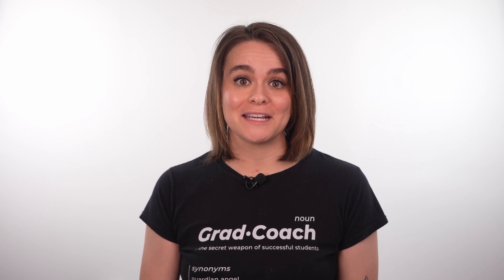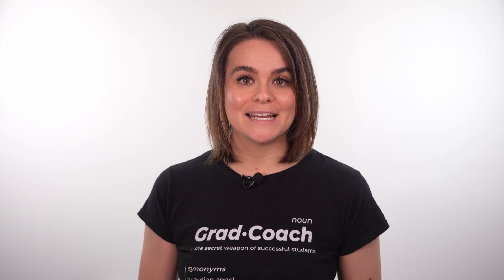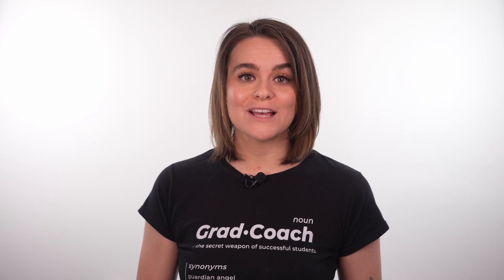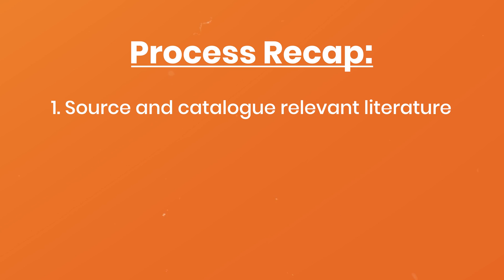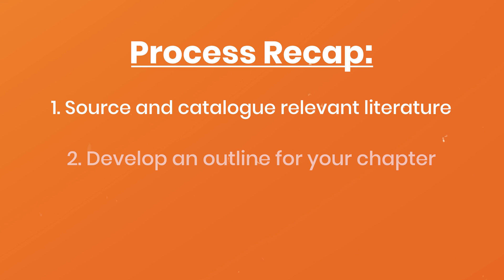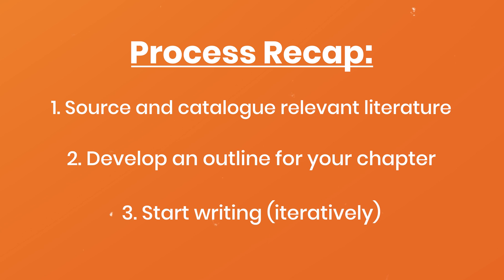Alright, we've covered a lot of ground here, so let's do a quick recap. The three stages of the literature review process are: one, sourcing and cataloging high quality articles; two, planning your chapter structure and drawing up an outline; and three, getting down to writing. Of course, this is just a big picture overview and there's a lot more detail and nuance to unpack.